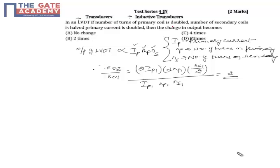And we have the primary current is also doubled. So what is the overall impact on the output of this kind of setup when we compare it with a normal output?